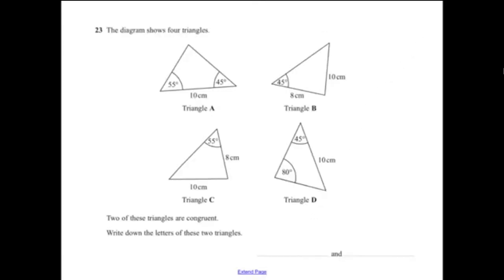Question 23: two of the four triangles shown are congruent. Congruent means same shape and size. Triangle A and triangle D have exactly the same size and shape, so the answer is A and D.